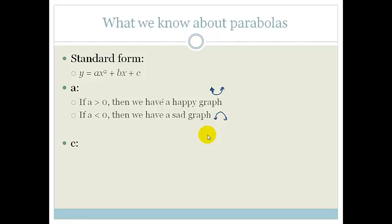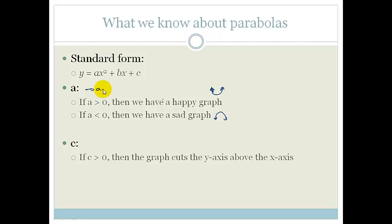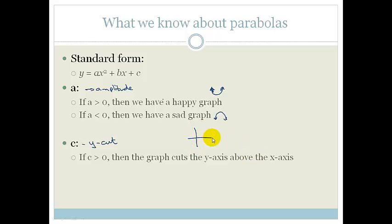The value of a is basically your amplitude — it determines whether the graph is going to be thin or fat, or happy or sad. c is your y-intercept. If c is greater than 0 then the graph cuts the y-axis above the x-axis. If I draw a rough sketch, that would be a graph that has a y-intercept above the x-axis, therefore c would be greater than 0.